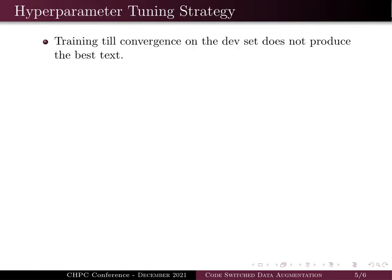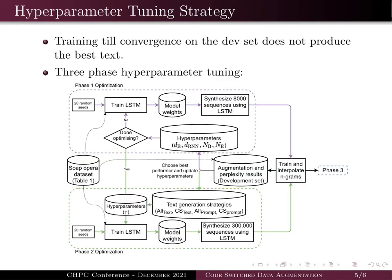In our work we found that training to convergence from the development set did not produce the best text when used for n-gram augmentation. Therefore we designed a three-phase hyperparameter tuning strategy in which the first phase optimizes the embedding and recurrent dimensions as well as the batch size and the number of epochs.